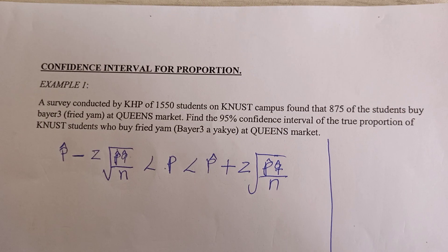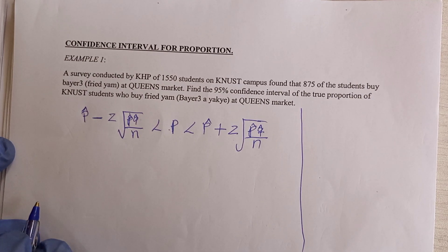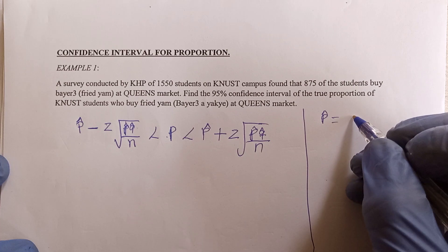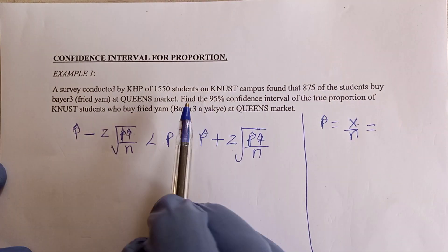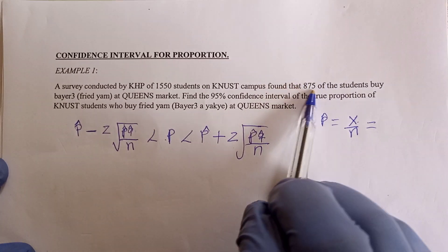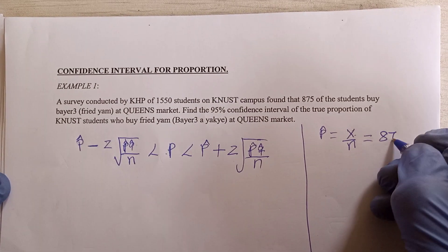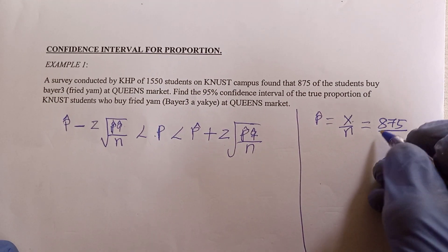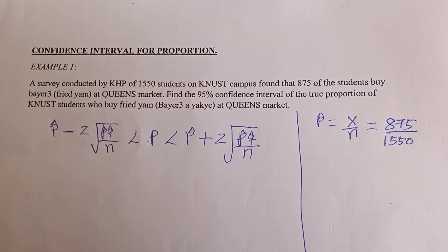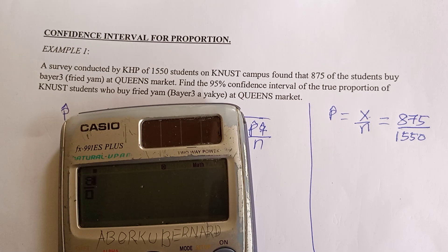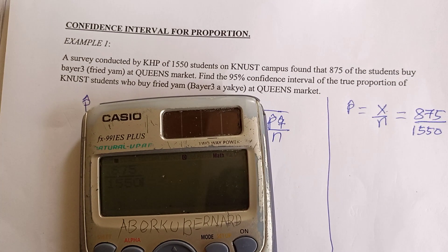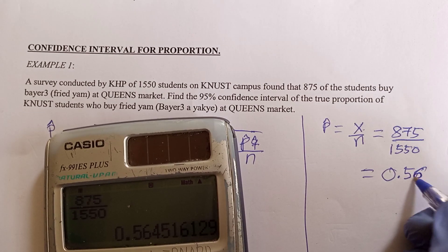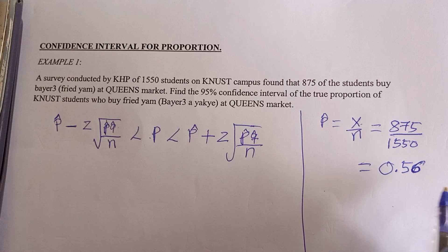Now, what do we mean by p̂? To get p̂, you use the formula p̂ equals x divided by n, where x is the number of students who say they buy at Queen's Market — that's 875 — and n is the total number of samples taken, which is 1550. When you calculate 875 divided by 1550, it gives you 0.56 in two decimal places. That is the sample proportion.